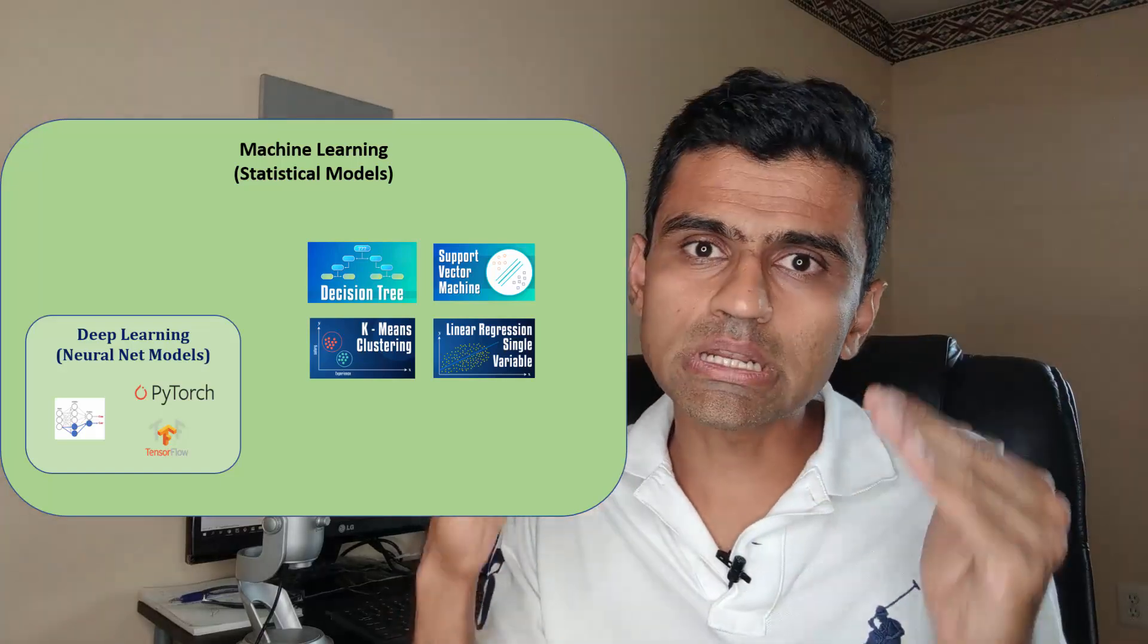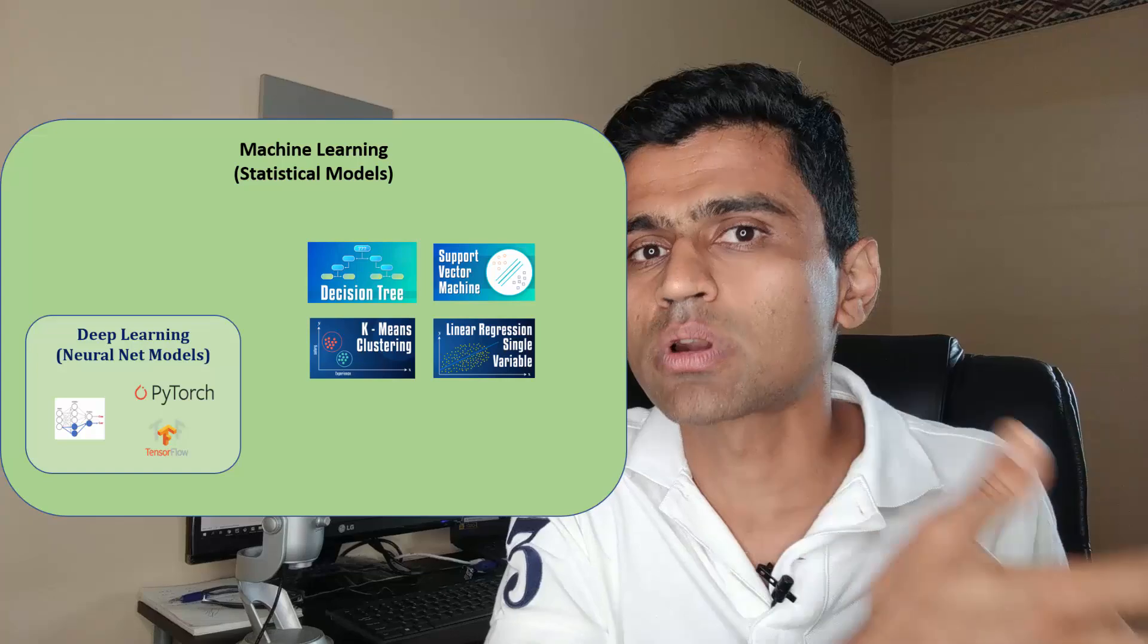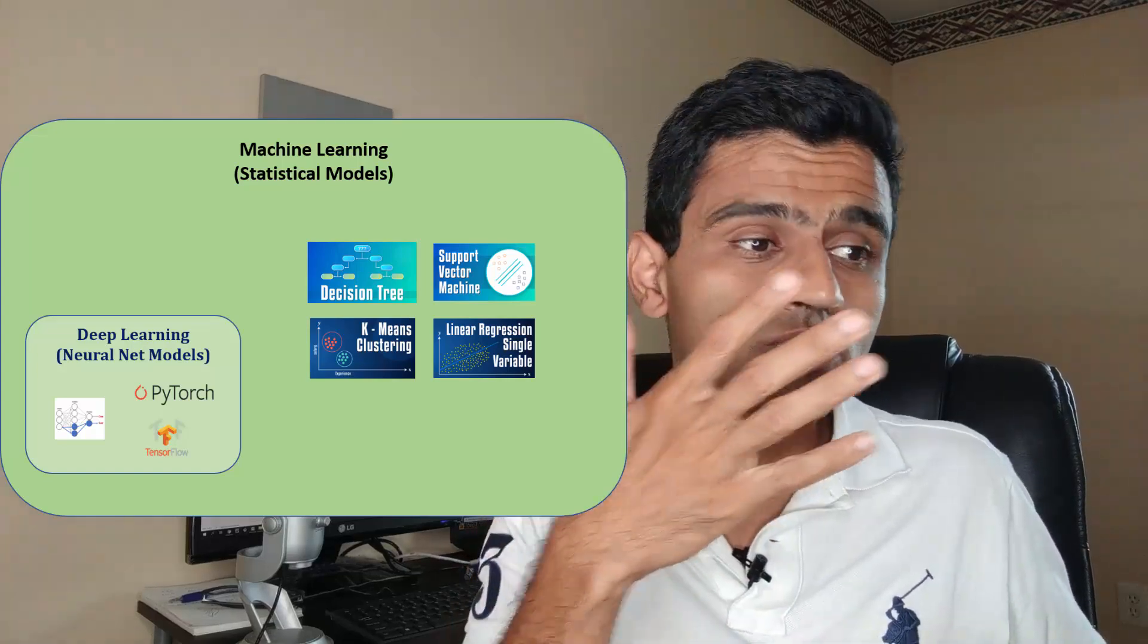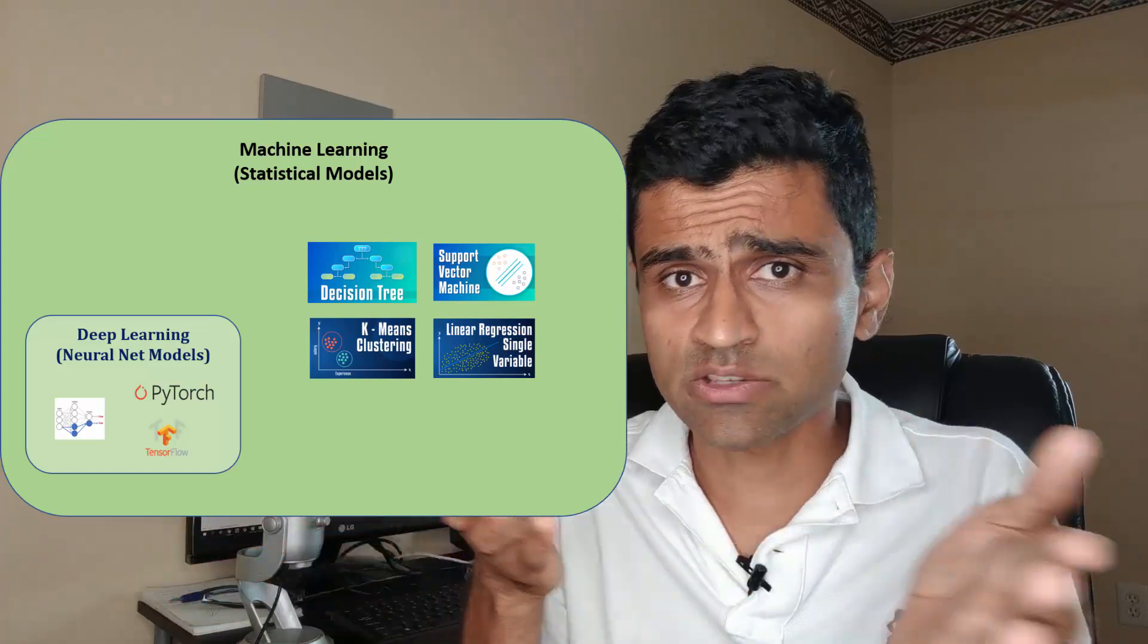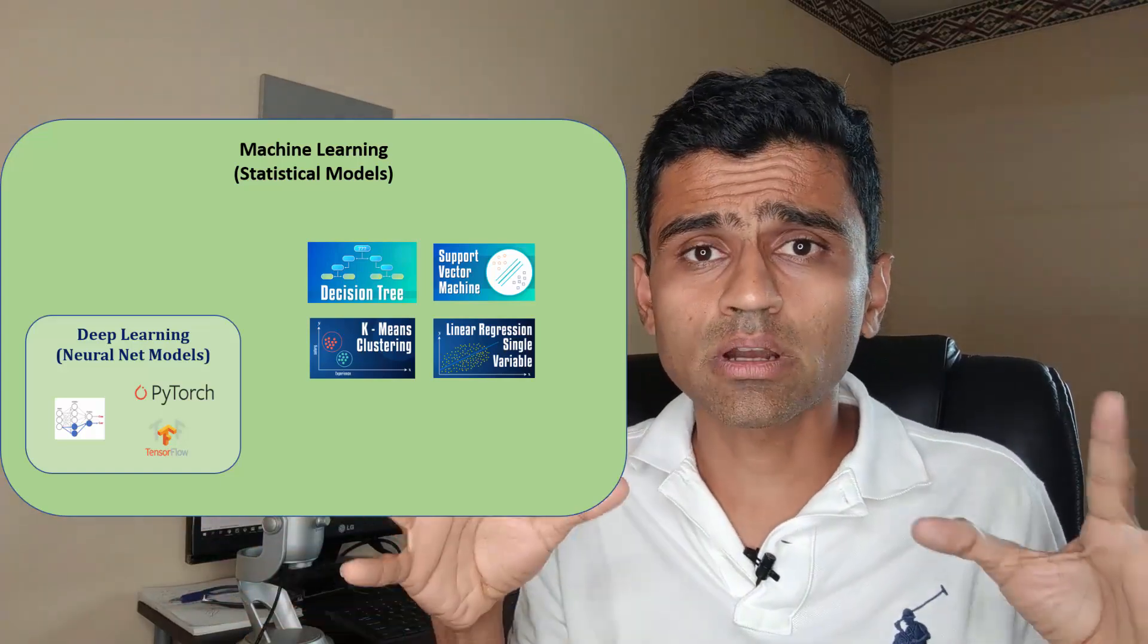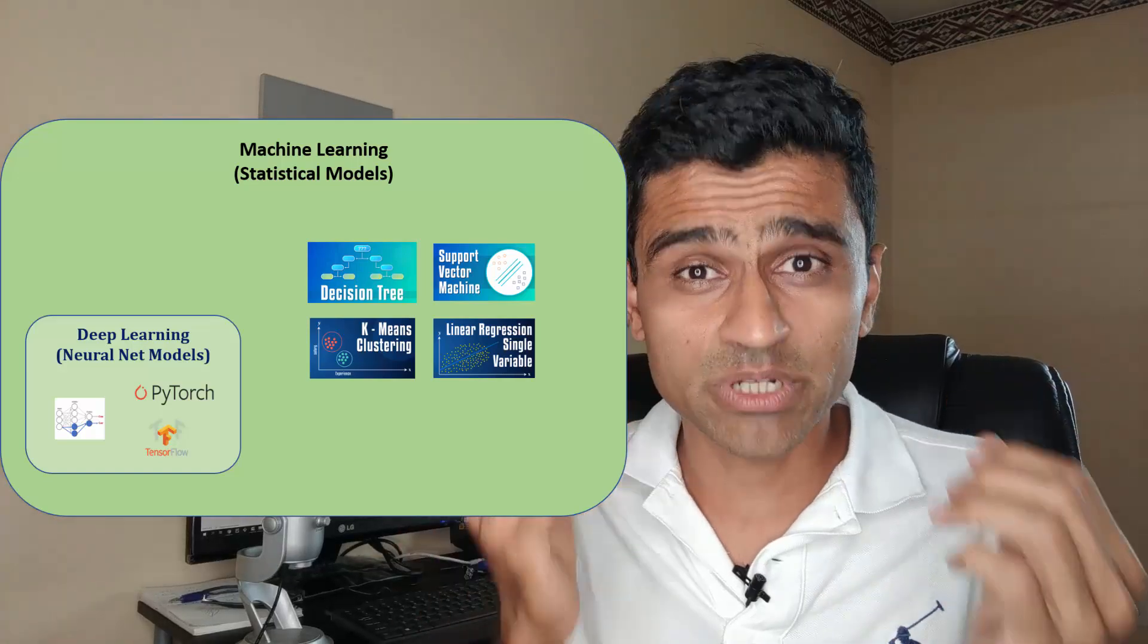For doing machine learning, you don't have to necessarily use neural networks. You can either use neural networks or statistical algorithms that I just mentioned. All of these come under a single umbrella called machine learning.